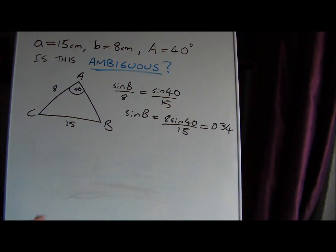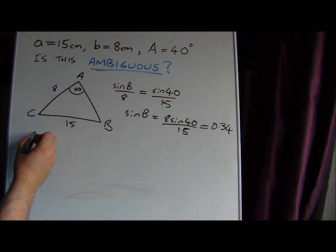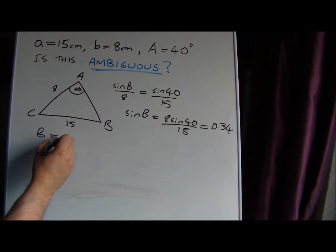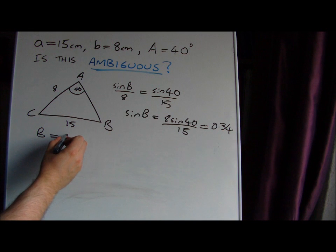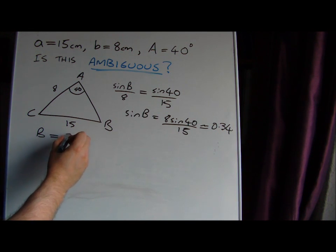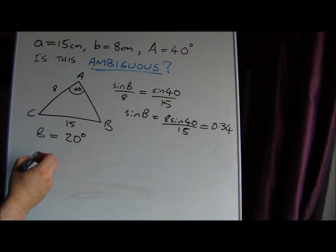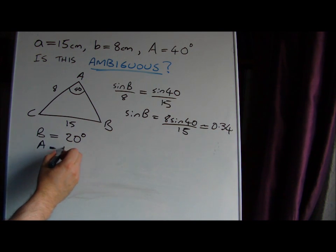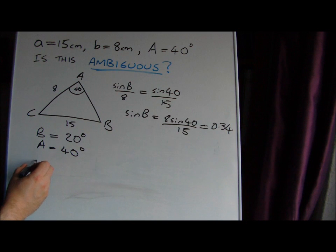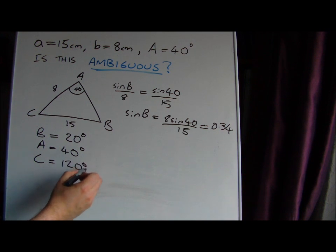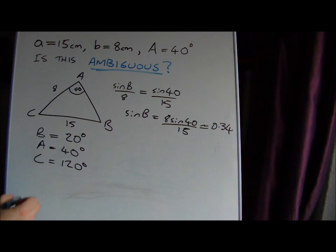Now we can get the angle B by taking the inverse sine function. Inverse sine of 0.34 will give you about 20 degrees. We already know that angle A is 40 degrees, so we can use the angle sum of a triangle to calculate the remaining angle C, which in this case is going to be 120 degrees. So this is a very bad sketch - that angle is 120 degrees.